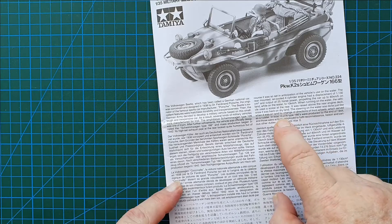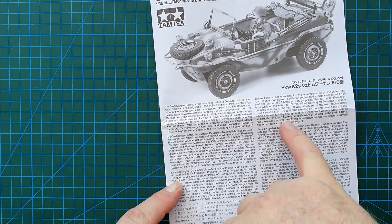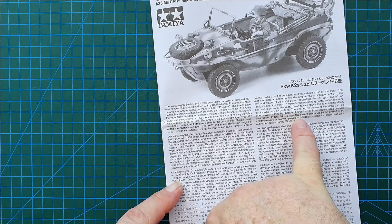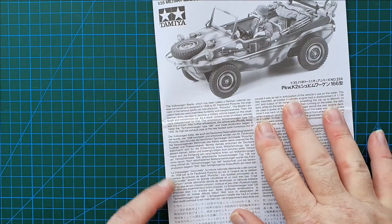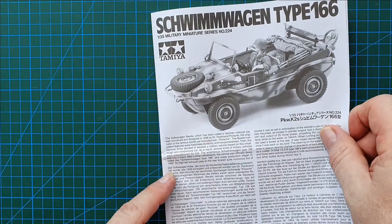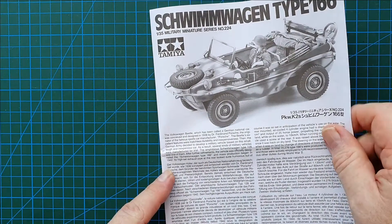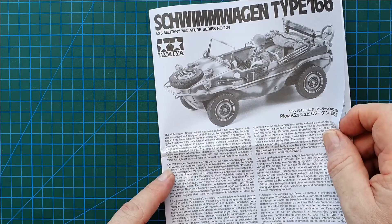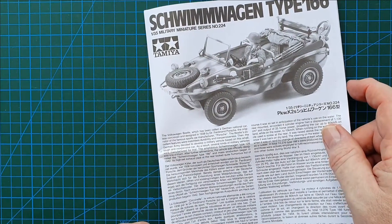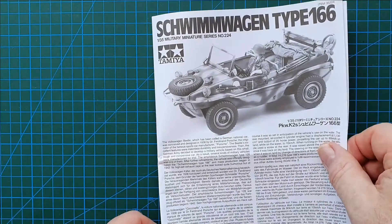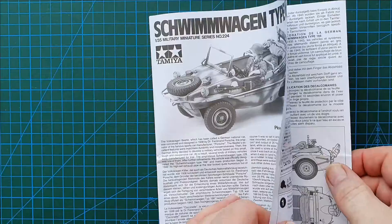It says here 14,276 Type 166s. So there was an awful lot of Kugelwagens, Schwimmwagens, you name it, built during the war. And not many left in existence. Okay, so that's pretty good to know. It's always good to know history on the vehicles. All right, so let's have a look and see what's inside the instructions.